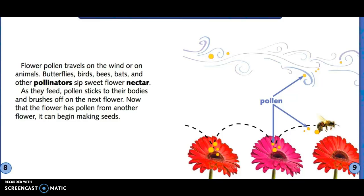As they feed, pollen sticks to their bodies and brushes off on the next flower. Now that flower has pollen from another flower. It can begin making seeds.